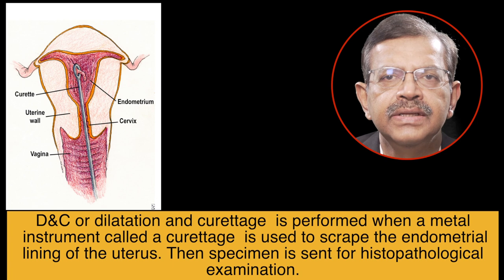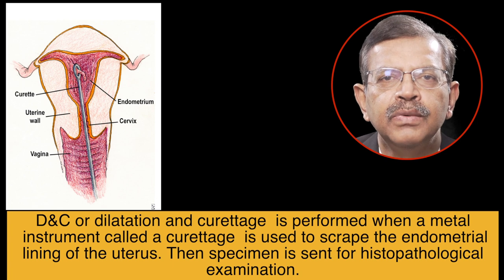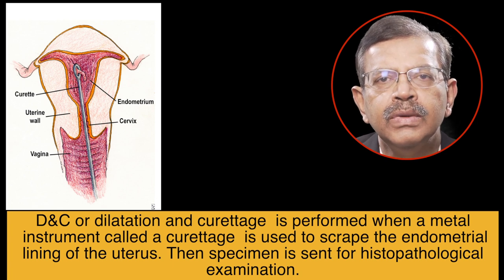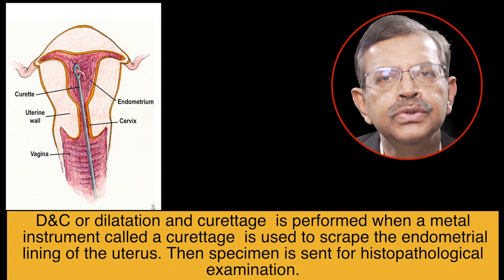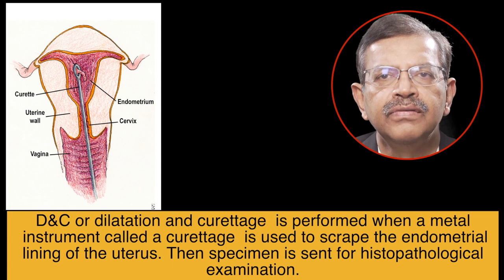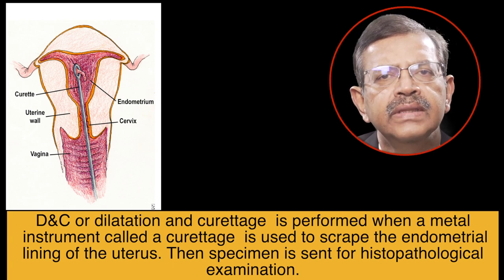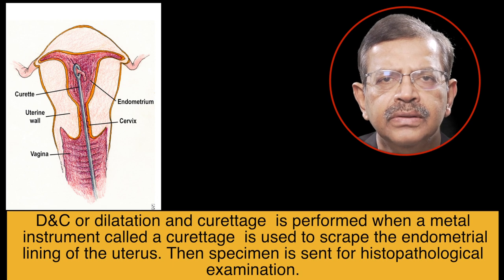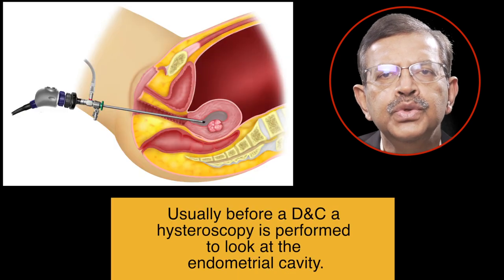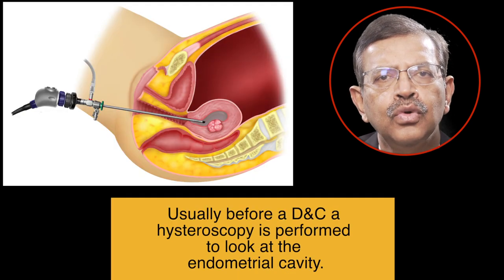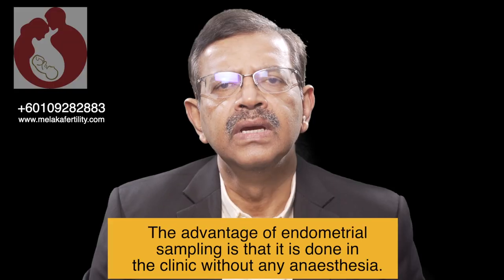DNC, or dilatation and curettage, is performed when a metal instrument called a curette is used to scrape the endometrial lining of the uterus, and the specimen is sent for histopathological examination. Usually before a DNC, a hysteroscopy is performed to look at the endometrial cavity.